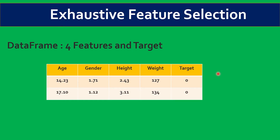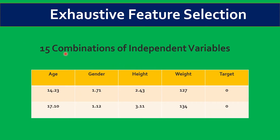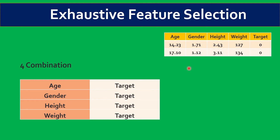Suppose we have a data frame where we have four features and a target variable. We have age, gender, height, and weight, and this is a target variable. Based on these independent variables, it will try to fit this model where it will try to predict the target variable, and it will make different combinations using the exhaustive feature selection.